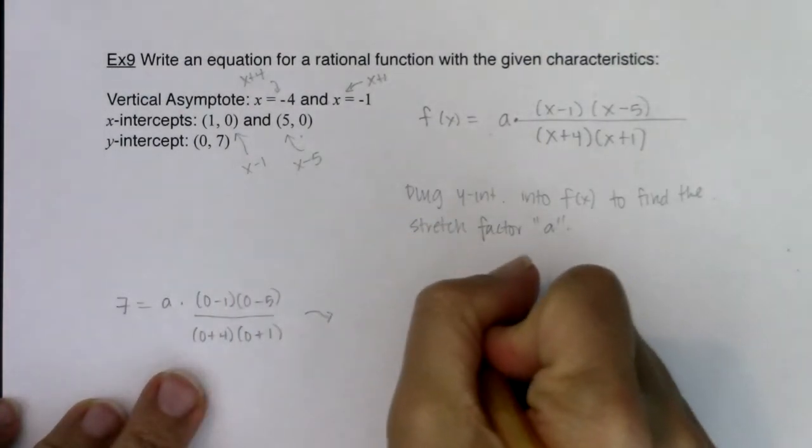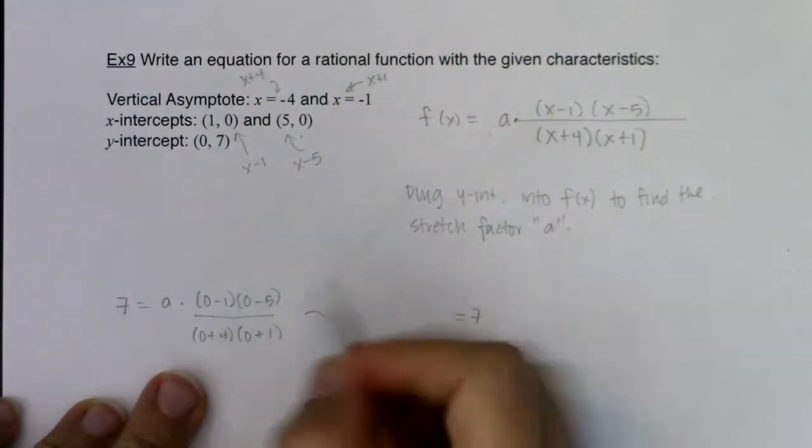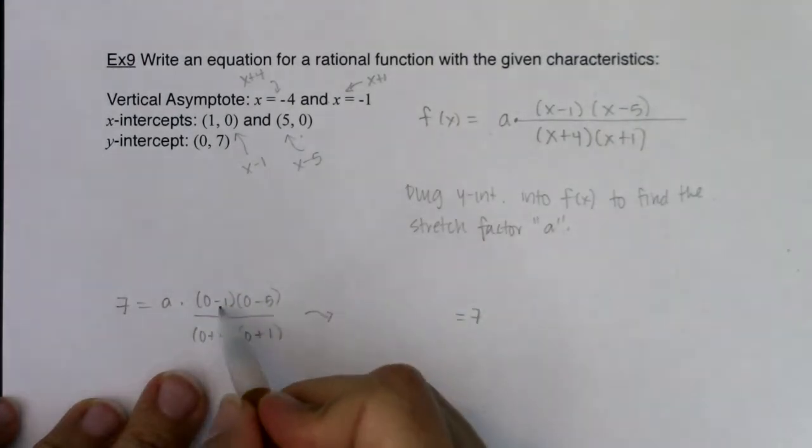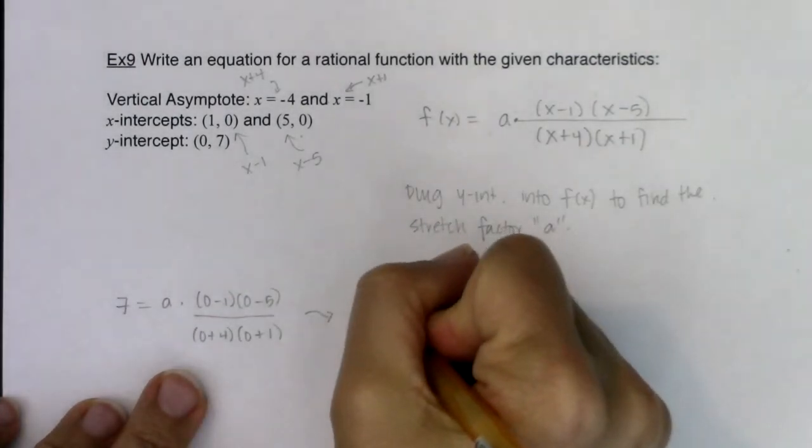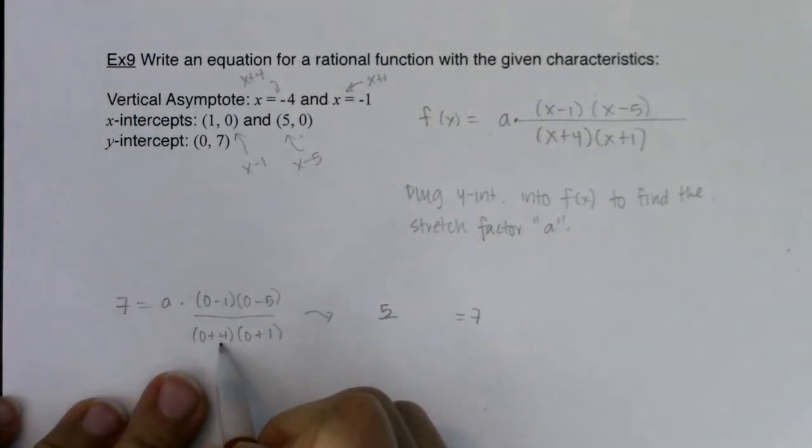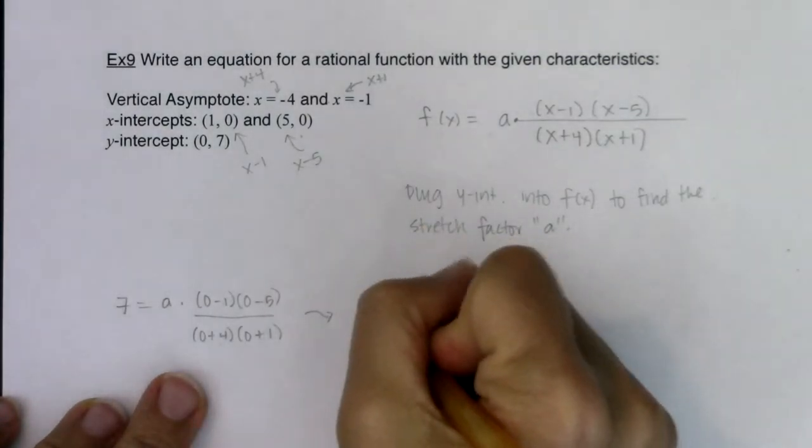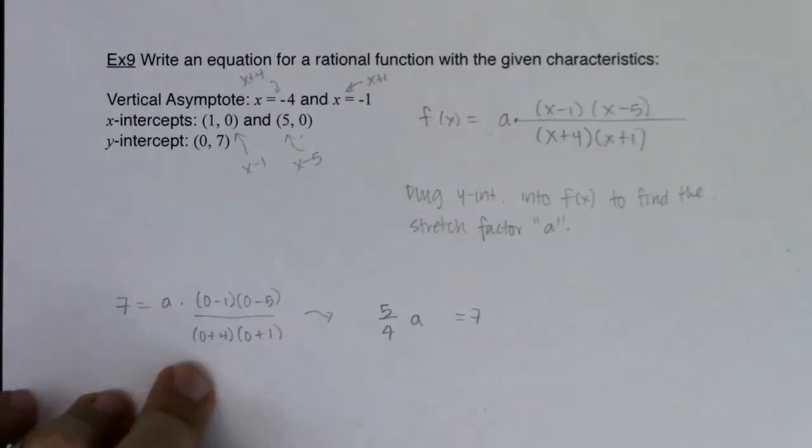So I have, I'm going to put the 7 on the right side of the equation. I usually like my variables on the left side. So we have negative 1 times negative 5, which would be positive 5. I have positive 4 times positive 1, which would be 4. So I have 5 fourths a equaling 7.